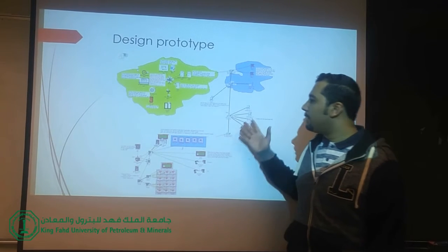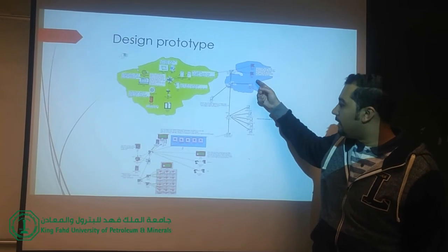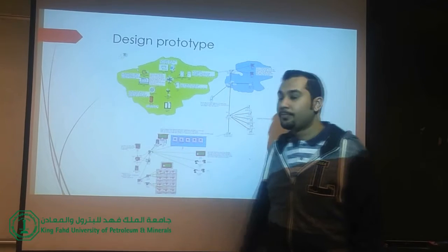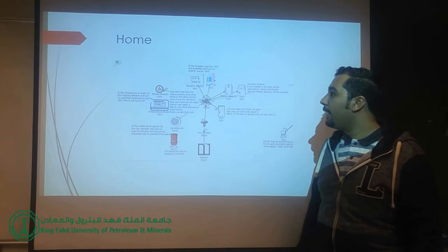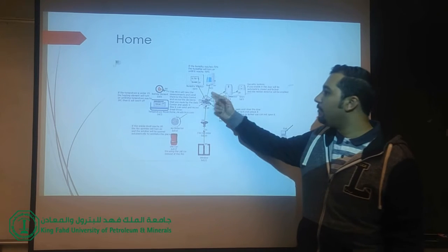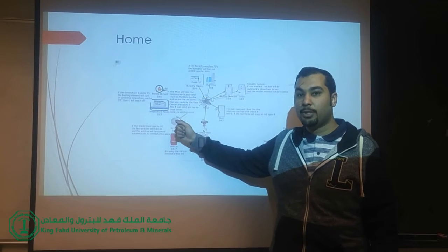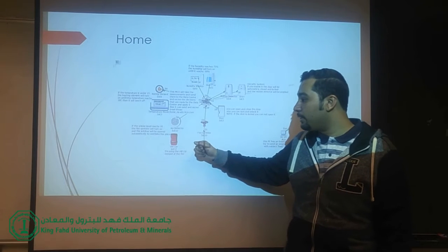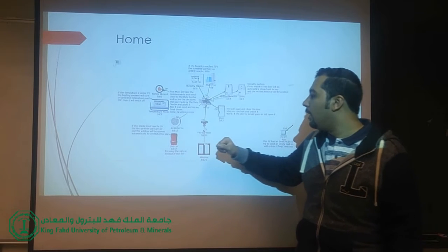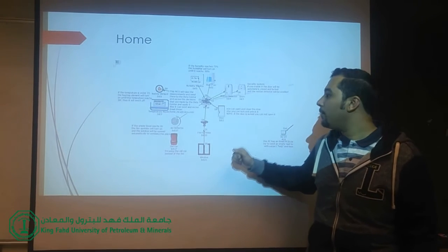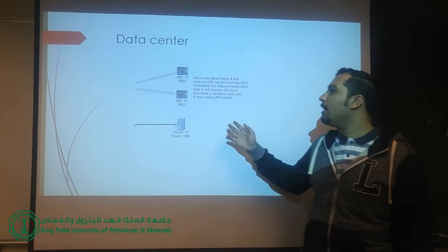In our project we implement three main areas: the home area in the yellow region, the data center, and the industry. In the home area we have different components — a humidifier and humidity monitor, a heating element and temperature sensor, a smoke detector, and we use an old car instead of fire to generate smoke. We also have a fire sprinkler, smart window, motion detector, siren, and smart door.